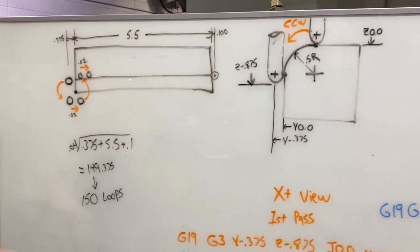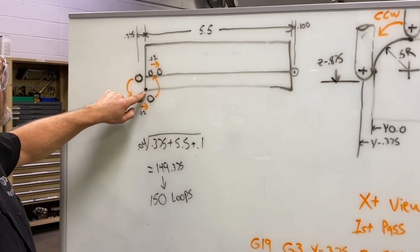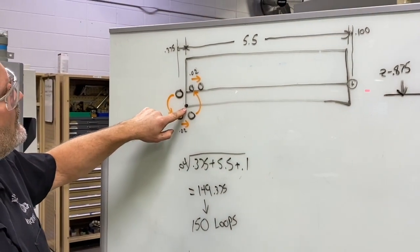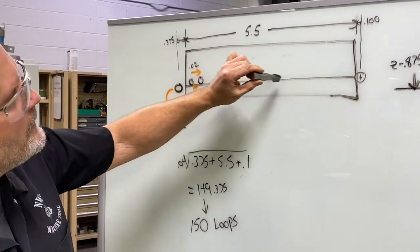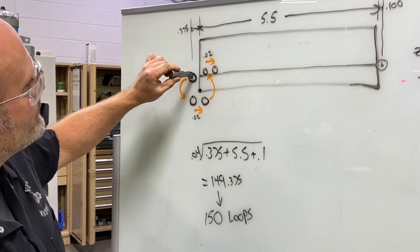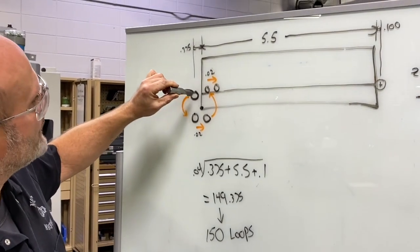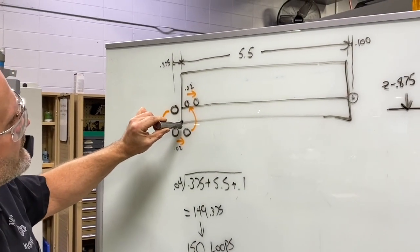Looking at the top view of our part, I'm placing my origin in this lower left corner, so my first position is going to place the center of this ball nose end mill right along that tangent point at the top of the part, and from there I'm going to do that arc move down to the opposite end of the part.